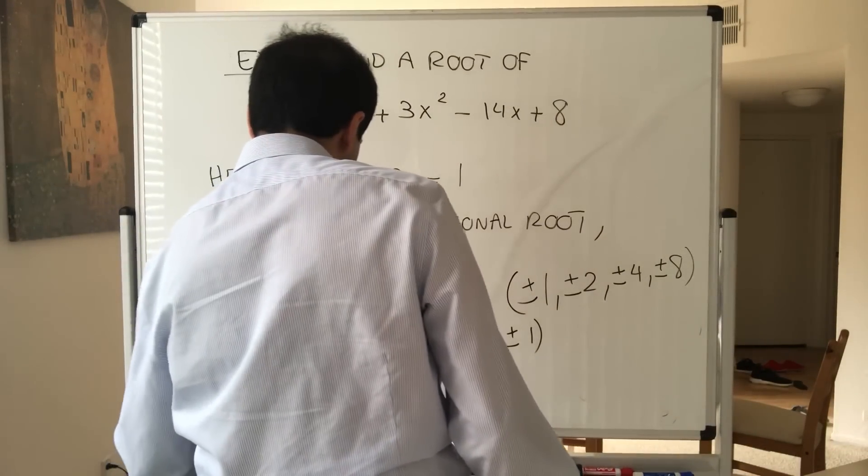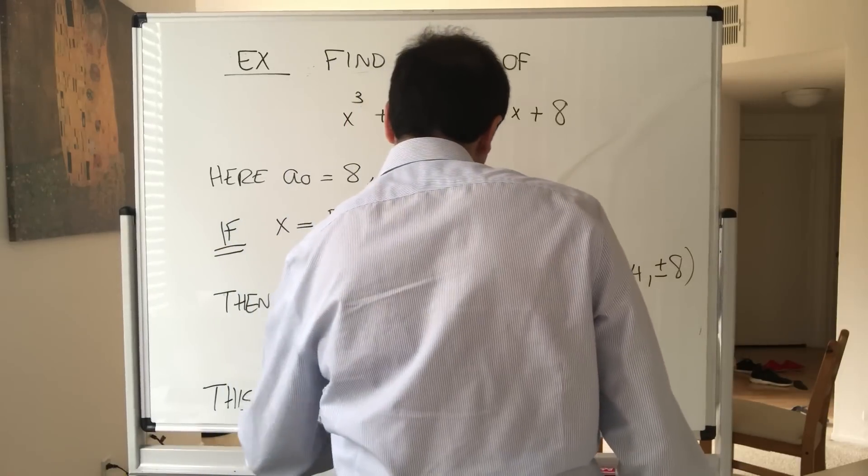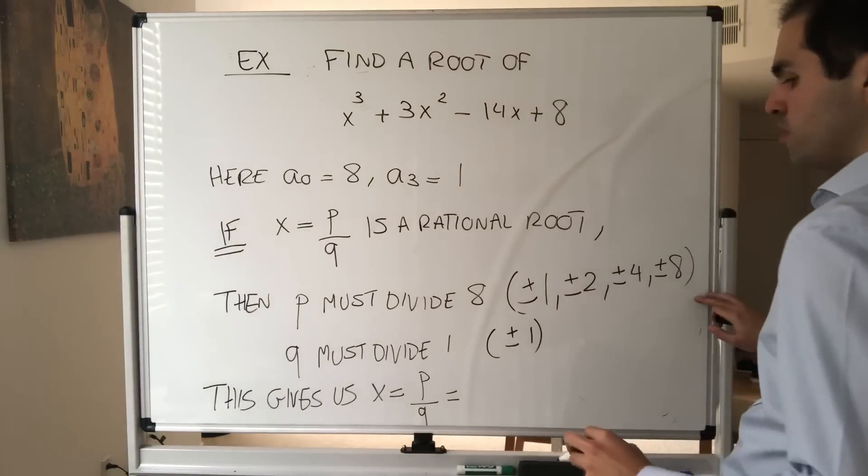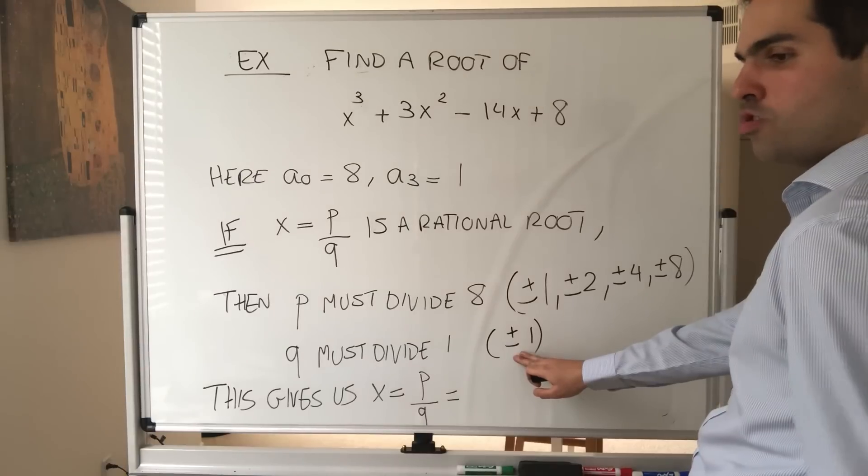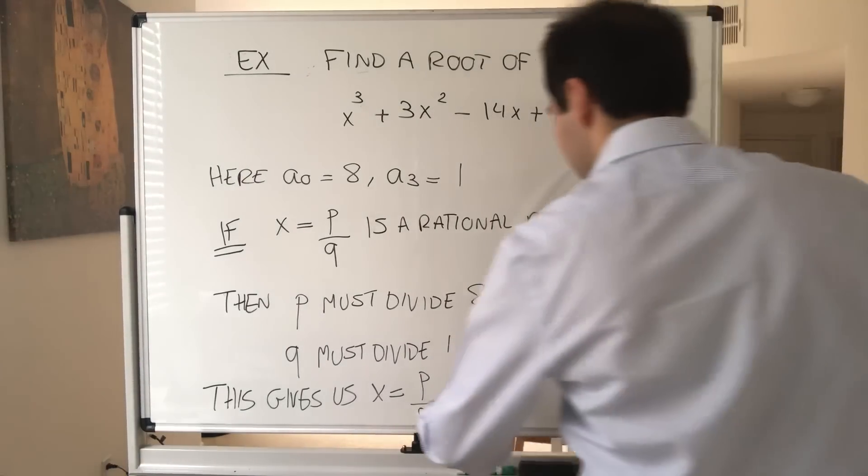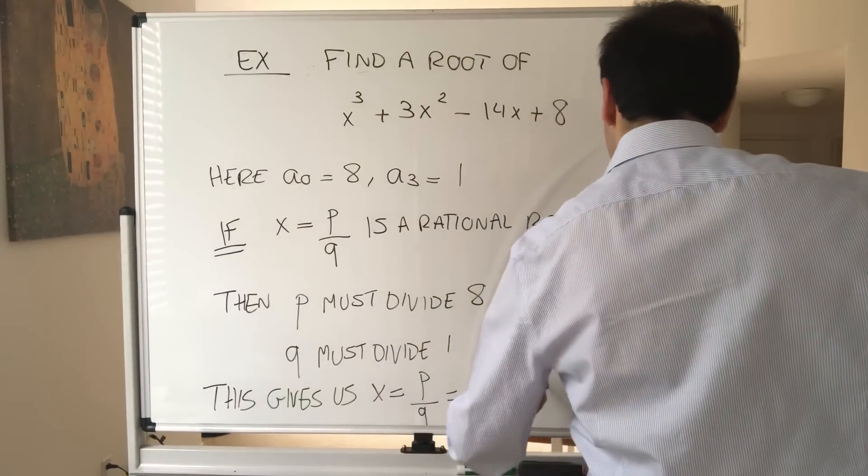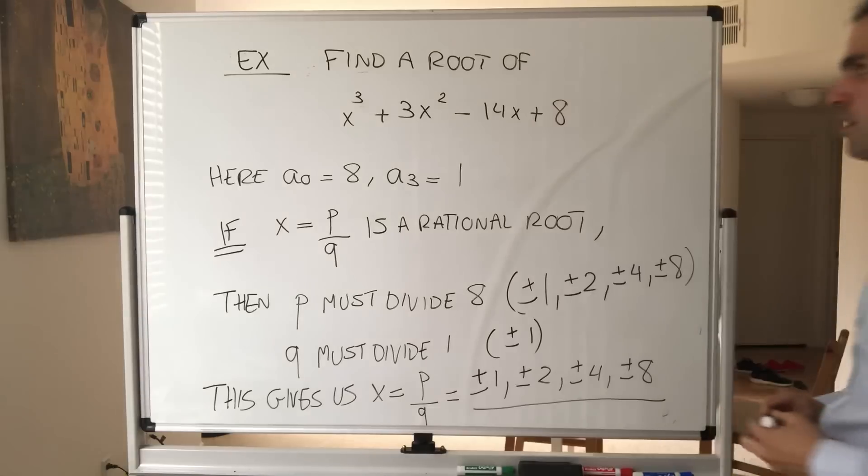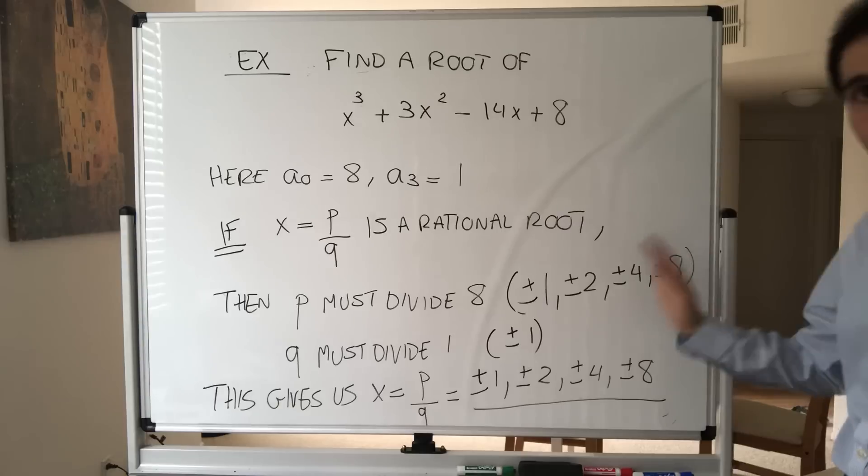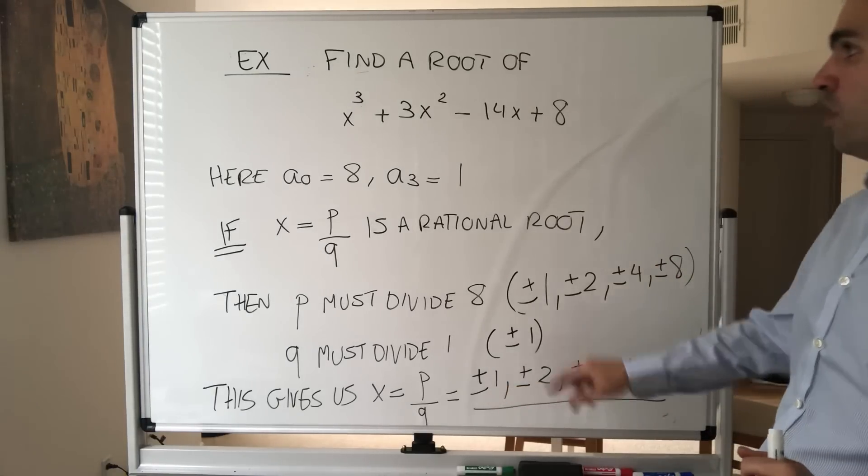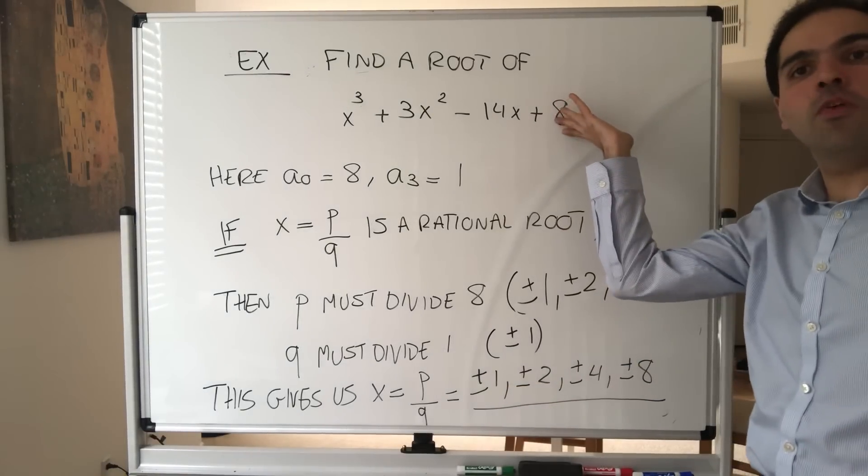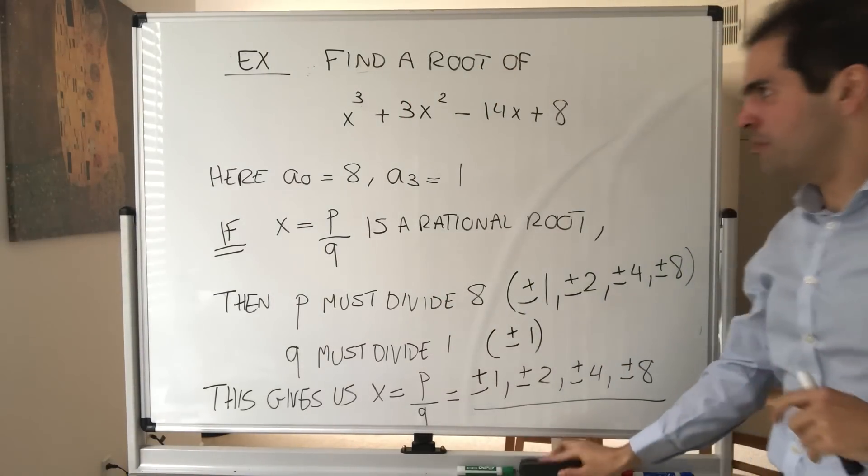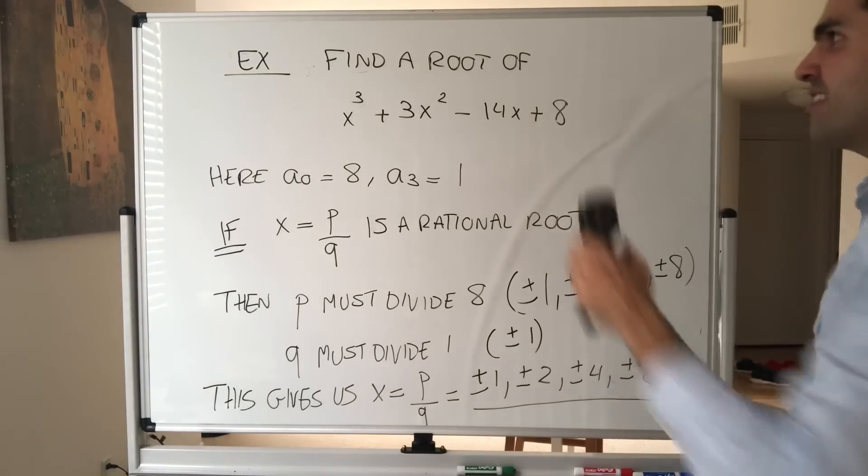So this gives us x, which is p over q, which again, all the possible choices here divided by all the possible choices here, which in the end luckily just gives us plus or minus 1, plus or minus 2, plus or minus 4, and plus or minus 8. And so all we have to do, again if we're lucky, just take each choice and plug it into the polynomial. If we find one of them we're done, because the problem is find one root of that polynomial. So again, let's roll up our sleeves and do that.